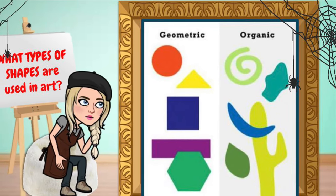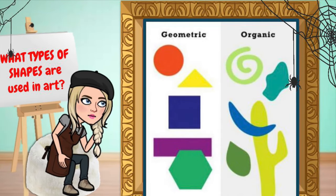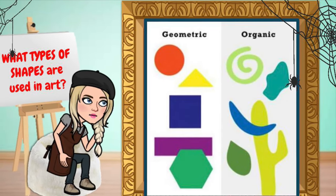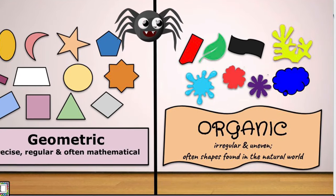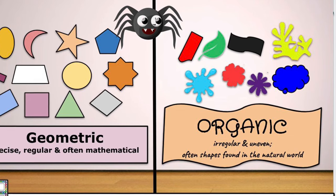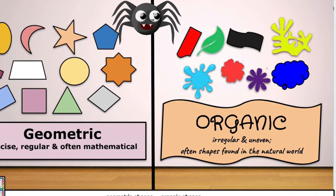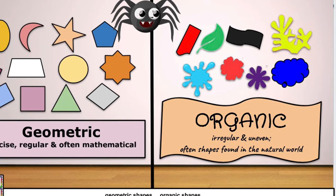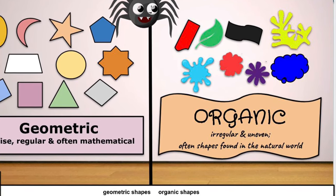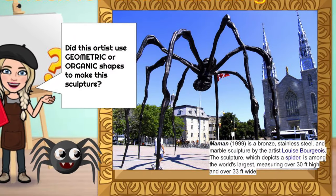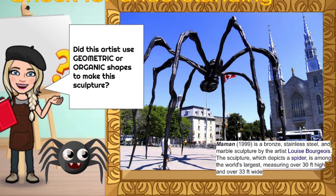We want to learn about the two main categories of shapes called geometric shapes and organic shapes. Geometric shapes are precise, regular, and often mathematical shapes. Organic shapes are more irregular and are oftentimes found in the natural world, like a leaf. So let's give it a try!